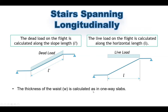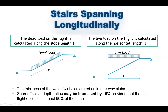The thickness of the waist is calculated as in one-way slabs, since the stair is assumed to span as a one-way slab from support to support. Based on the span, you calculate the thickness using the span-to-depth ratio. Also note that the span-to-effective-depth ratio may be increased by 15 percent, provided that the stair flight occupies at least 60 percent of the span. This allows a suitable thickness for the stair.